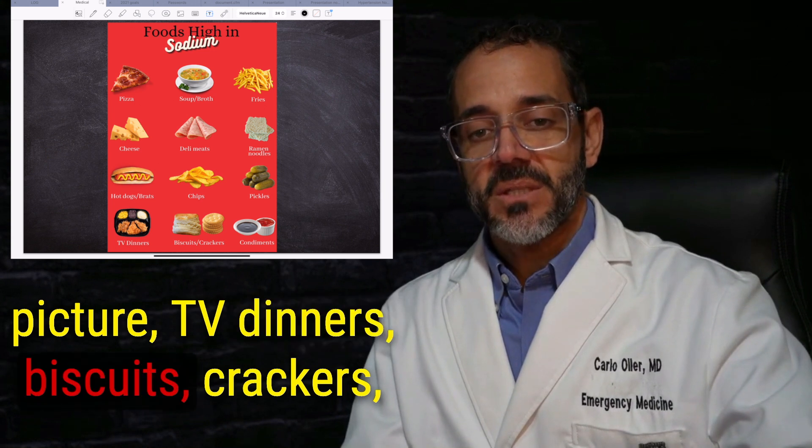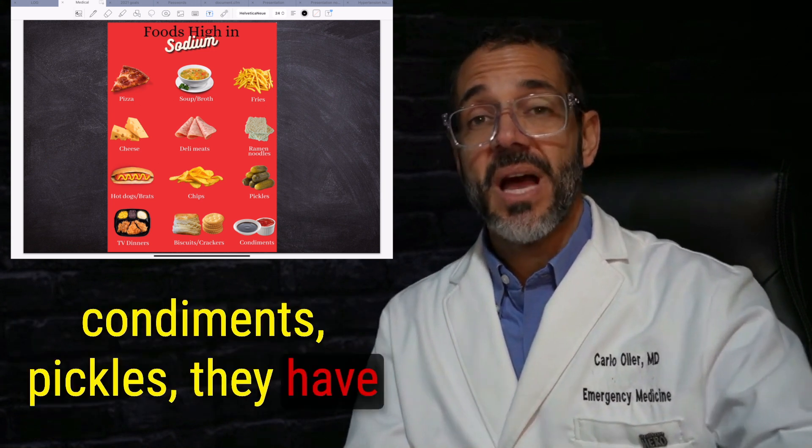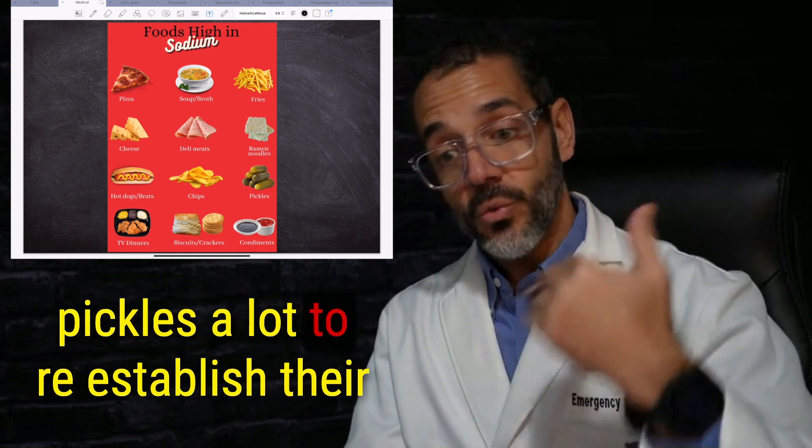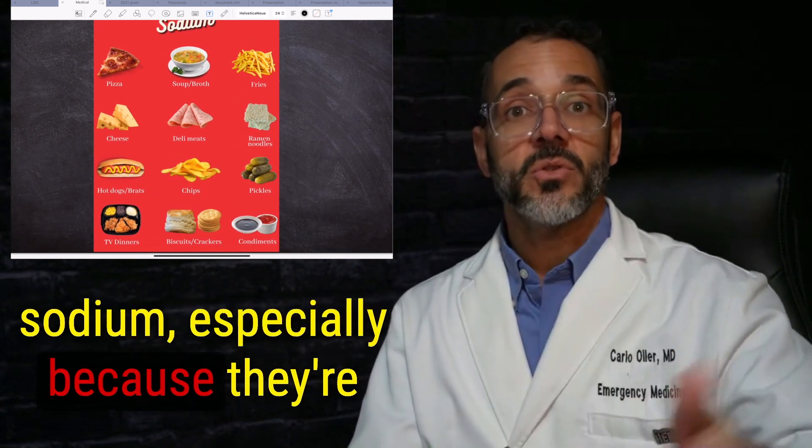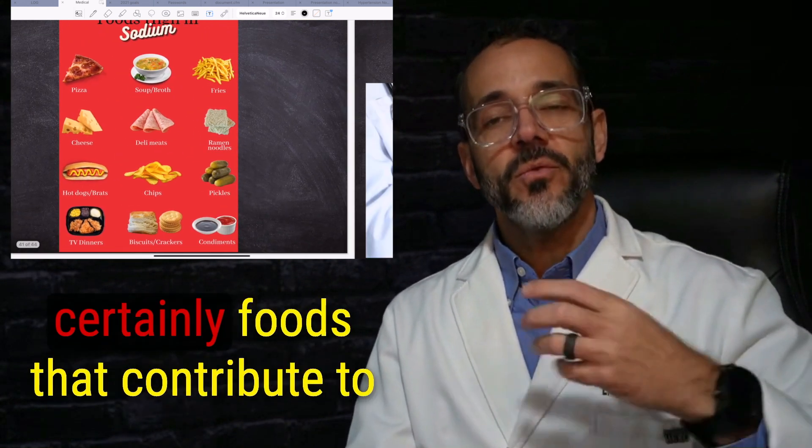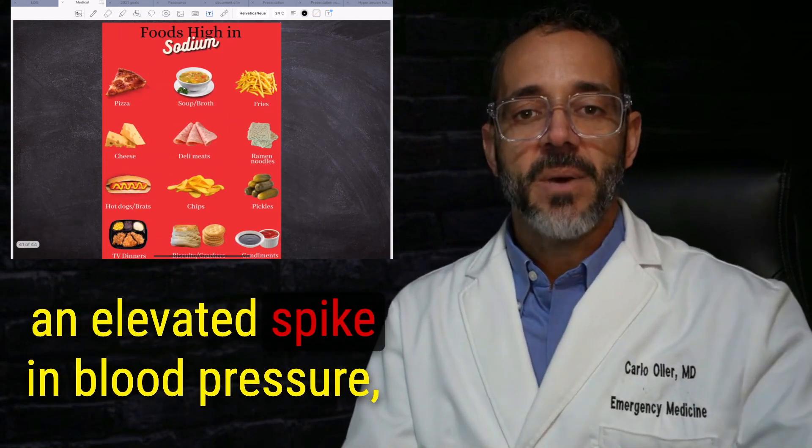Biscuits, crackers, condiments, pickles. They have tons of sodium, which is good for some things like runners. They're using pickles a lot to reestablish their sodium, especially because they're losing it through sweat. So it's not like they're bad foods, but certainly foods that contribute to an elevated spike in blood pressure.